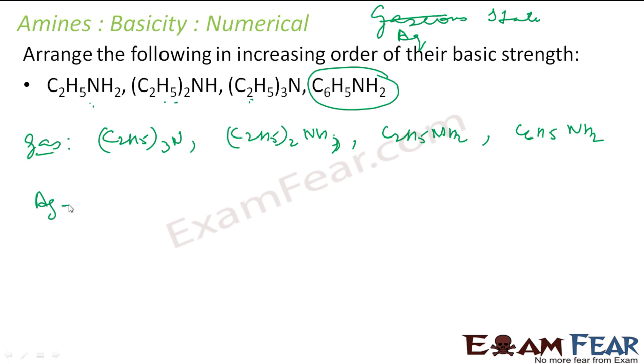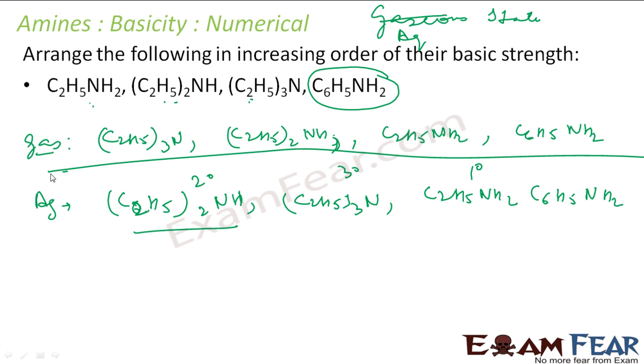But if you see the aqueous, it is a little different. This will always be there, the least one, we don't bother. But instead of tertiary, we have seen a secondary becomes most basic. This is what we have seen experimentally. And then becomes tertiary. This is my C2H5NH2. This is my C2H5NH. That is, this is my 2 degree, this is my 3 degree, and this is my 1 degree.